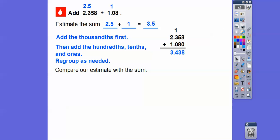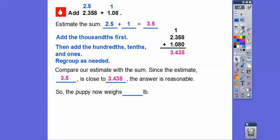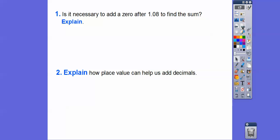So now we're going to compare our estimate with our sum. So here's the estimate, 3.5. Since it's close to 3.438, then our answer is a reasonable answer. So the puppy now weighs 3.438 pounds. That's how much that puppy weighs.